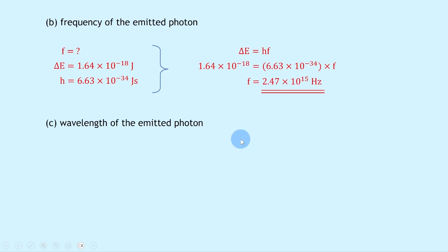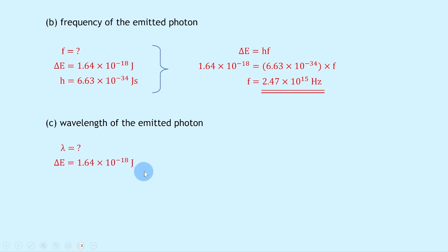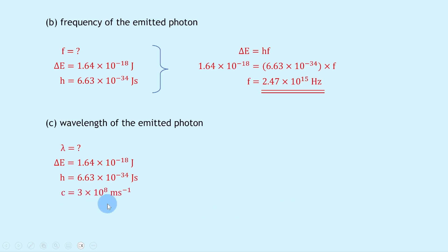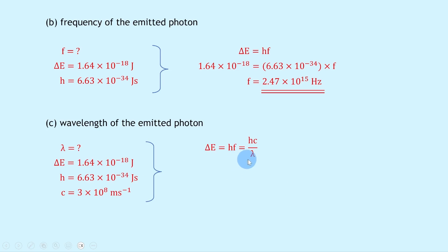Lastly, part c says: calculate the wavelength of the emitted photon. We're trying to find wavelength λ. The energy difference ΔE is 1.64 × 10⁻¹⁸ joules from part a, Planck's constant h is 6.63 × 10⁻³⁴ joule-seconds, and the speed of light c is 3 × 10⁸ meters per second. These last two constants are on the data sheet. Our equation for energy in terms of wavelength is ΔE = hf = hc/λ.